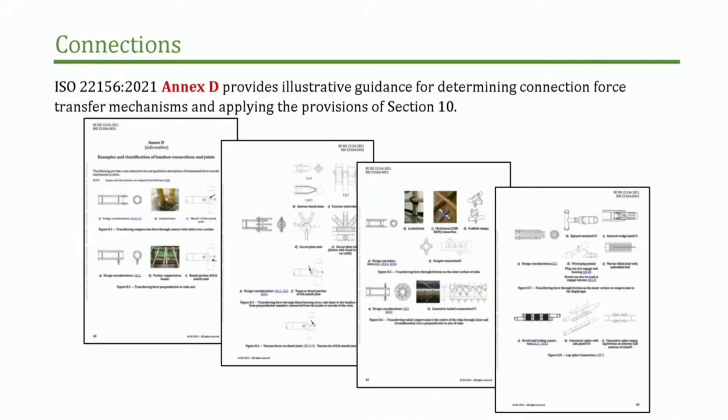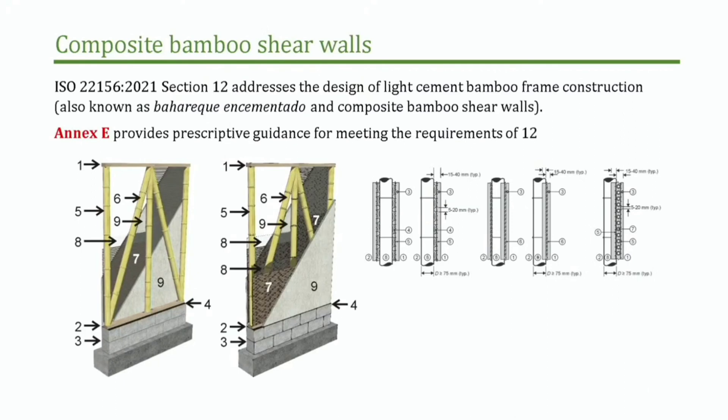There are lots of examples of connection design from very simple to very complex. The document still includes barricade construction, but the next version of this standard plans to take this out and make a separate standard, because this is a different type of construction with different expertise. We didn't have the time and ISO rules wouldn't allow it this time — we'll do it next time.